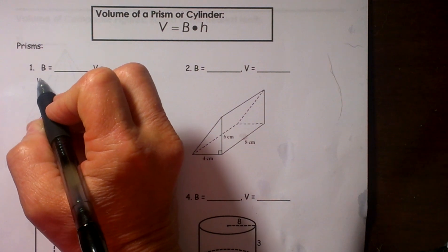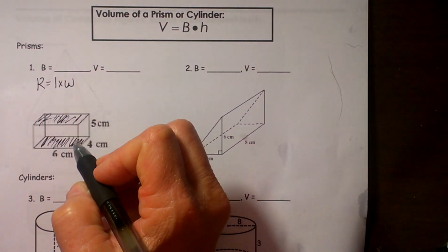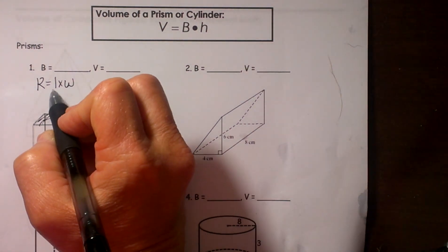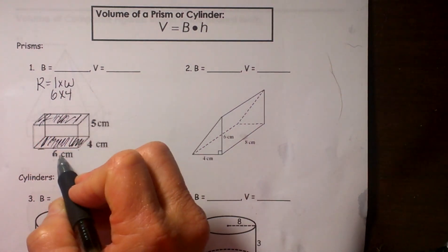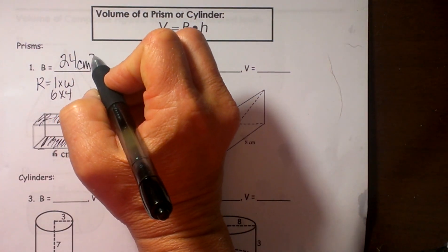So the area of a rectangle is equal to length times width. So I am going to take my length and my width and multiply those together. So my base area is 24 cm squared.